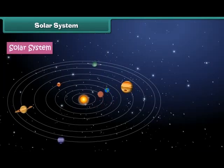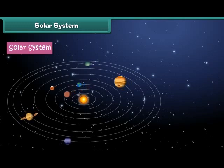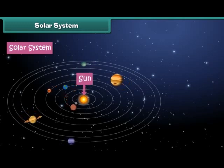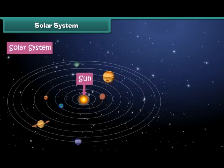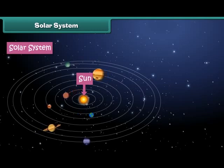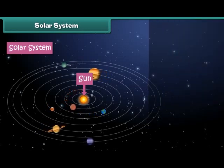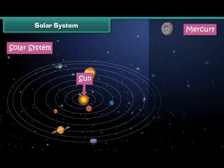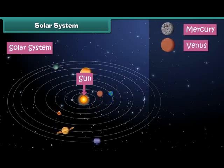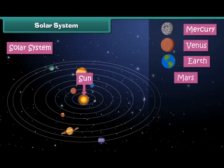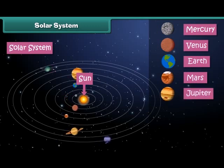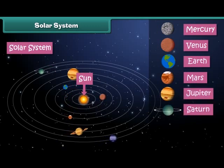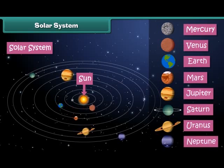Solar system: We live in the solar system. The solar system is the family of the sun and its eight planets. The sun is placed at the center and the eight planets revolve around it. The eight planets are Mercury, Venus, Earth, Mars, Jupiter, Saturn, Uranus, and Neptune.